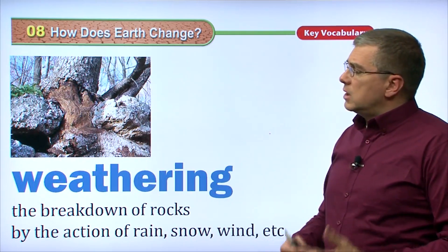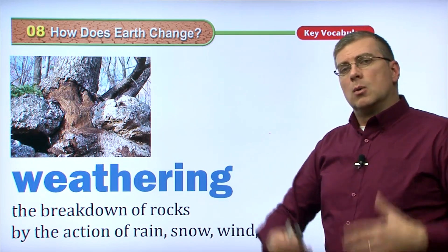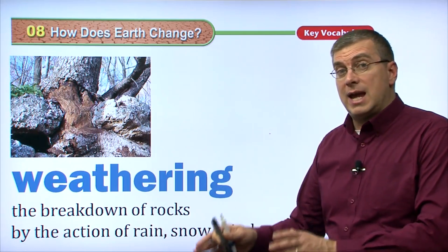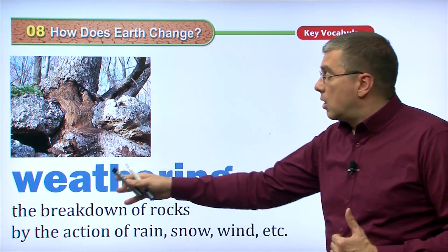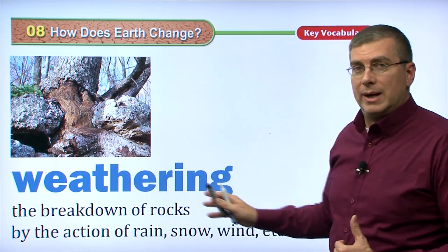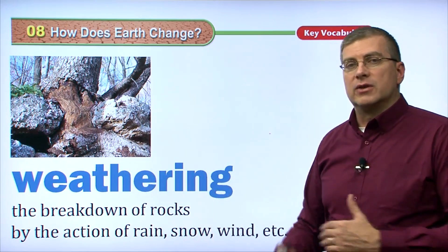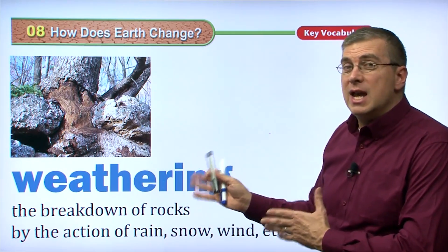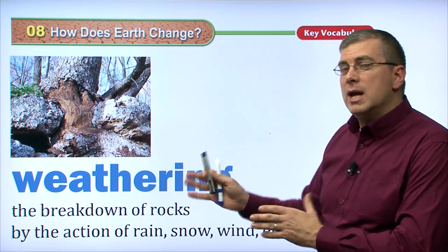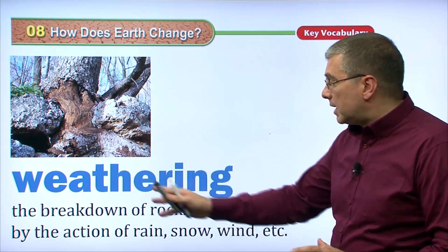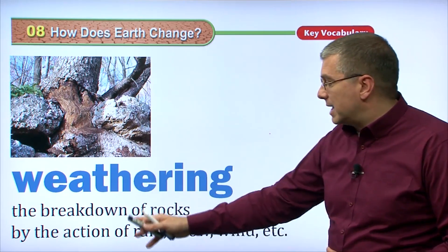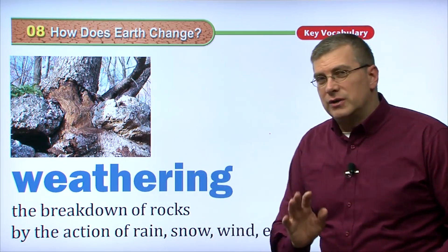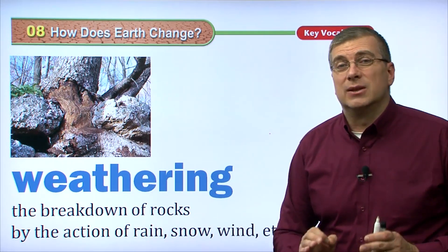We can also use another word to describe this process — we're talking about how the weather changes the features of the land. Now, over a long time, we can call that weathering. That is the process of the weather changing the environment — the breakdown of rocks by the action of rain, snow, wind, et cetera. When we talk about weathering, it's a change, but it's usually a destructive change. It's not a change for improvement.